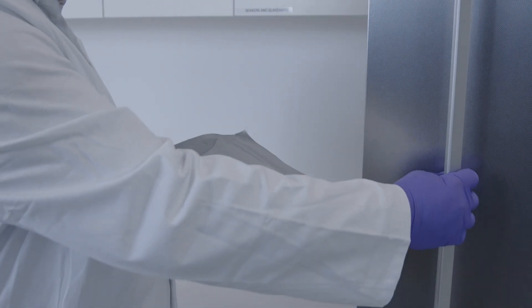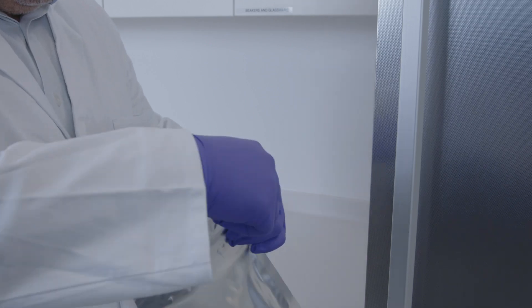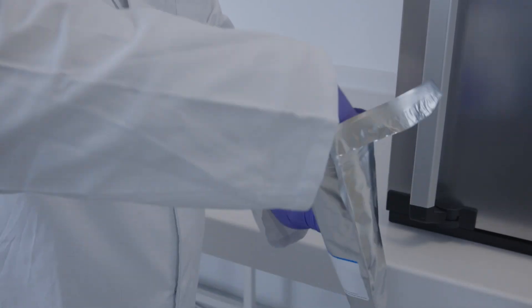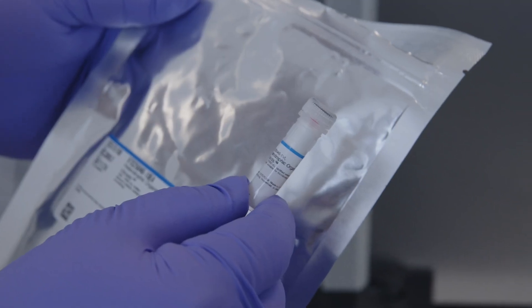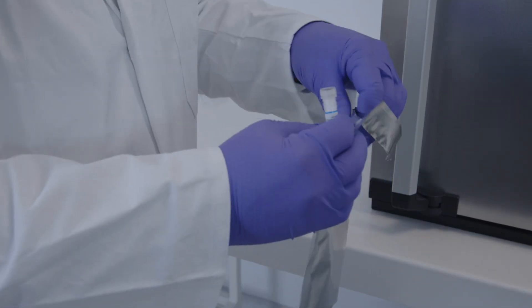When a disc is needed, open the mylar foil bag stored in the freezer and take out only a single vial. Then reseal the bag.